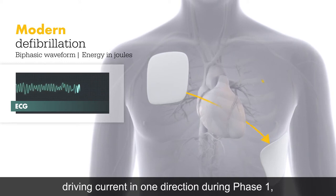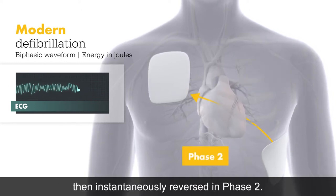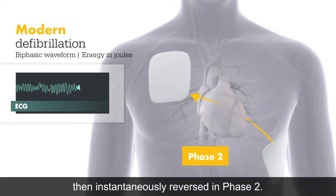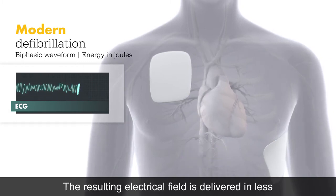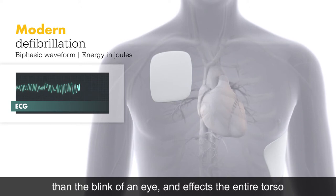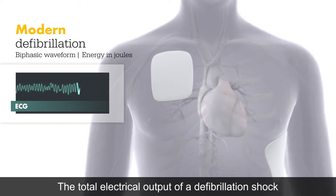Voltage is applied to the body for a specific time, driving current in one direction during phase one, then instantaneously reversed in phase two. The resulting electrical field is delivered in less than the blink of an eye and affects the entire torso.